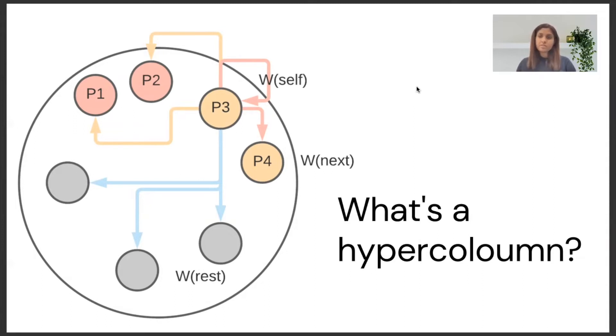According to estimates, a hypercolumn has between 50 to 100 cortical minicolumns present inside them. And each of the minicolumns contains about 80 neurons in general.